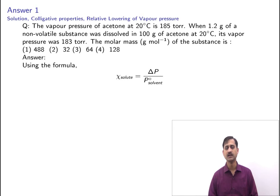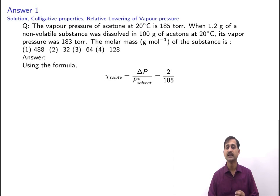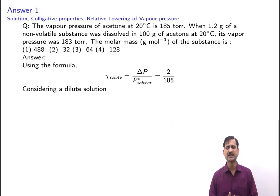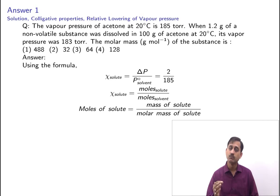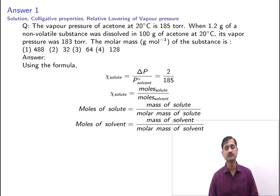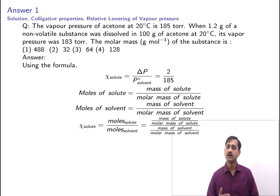Using the formula, χ(solute) = ΔP / P°(solvent) = 2/185. Considering a dilute solution where moles of solute are negligible compared to the solvent, χ(solute) = moles of solute / moles of solvent = (mass of solute / molar mass of solute) / (mass of solvent / molar mass of solvent). The solvent is acetone CH₃COCH₃ with molar mass 58 g/mol, and the mass of acetone given is 100 grams.